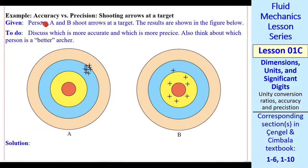Here's a simple example. Shooting arrows at a target. Two people shoot arrows at a target. Person A and Person B. Which is more accurate and which is more precise? I just noticed a spelling error. And then think about which person is a better archer.